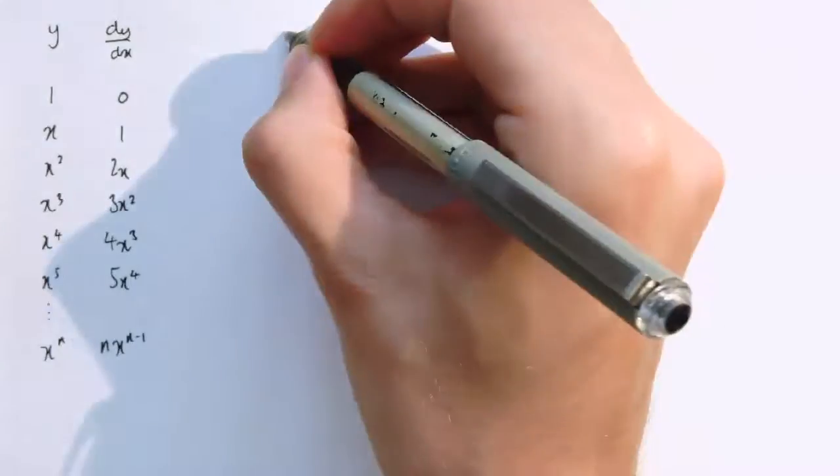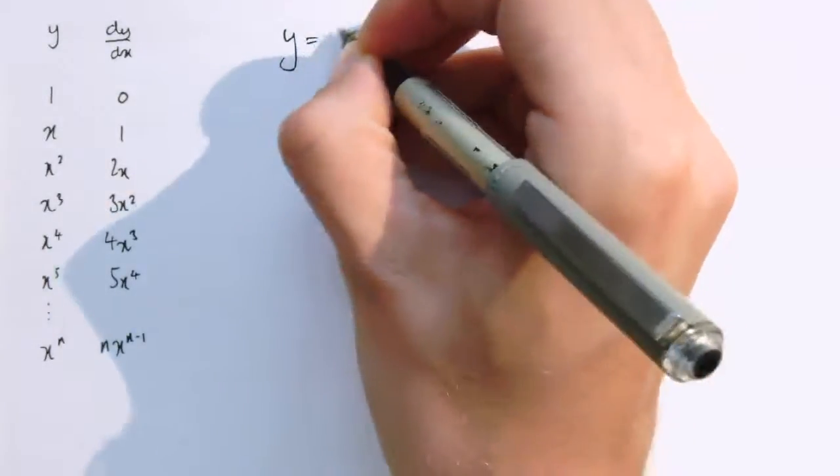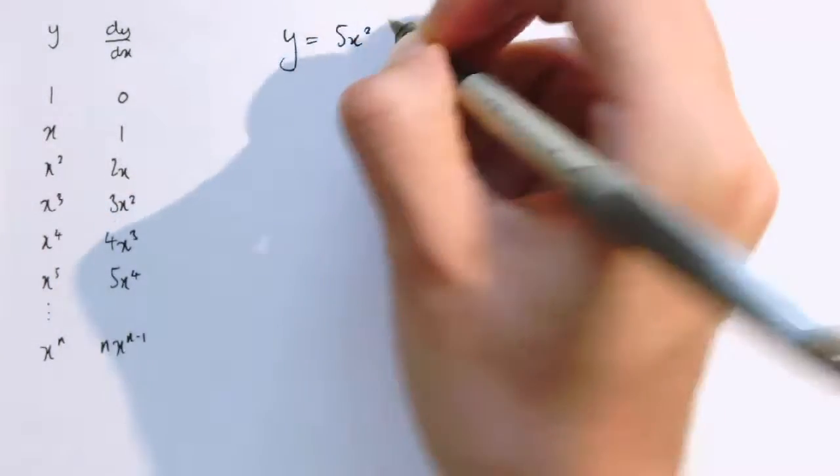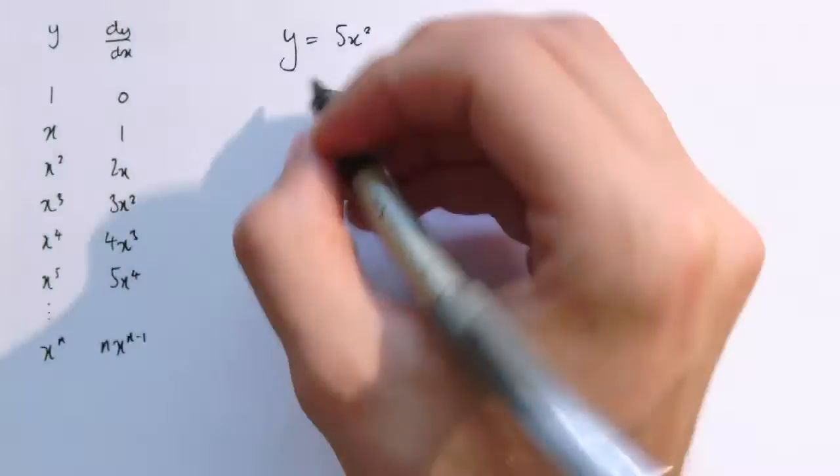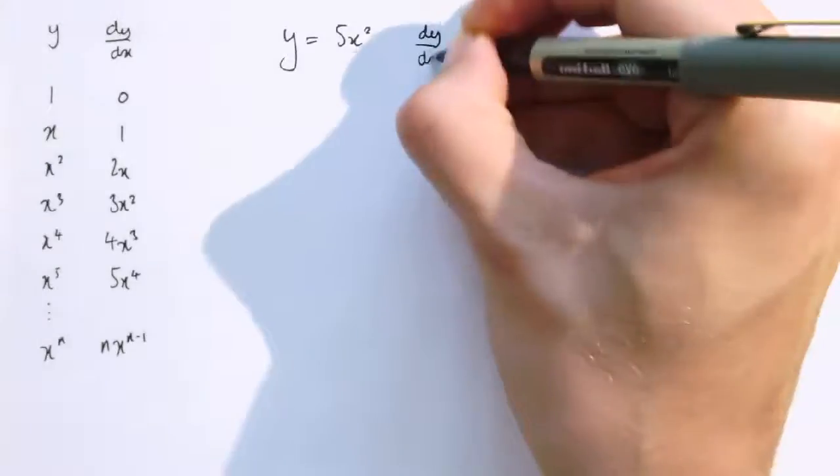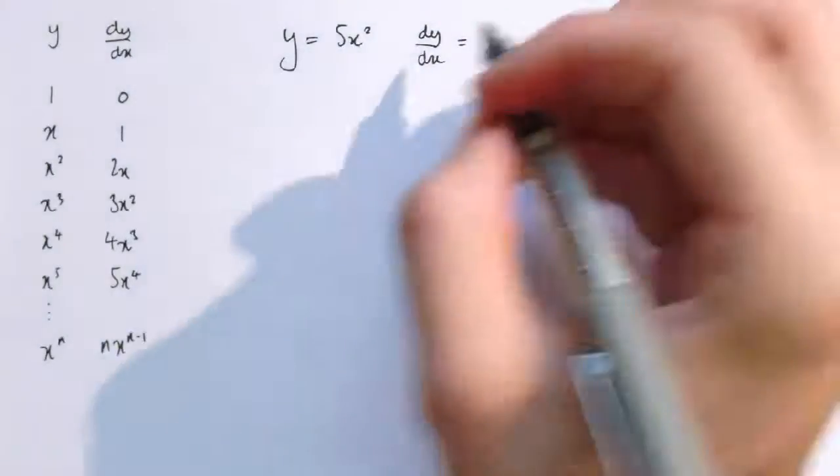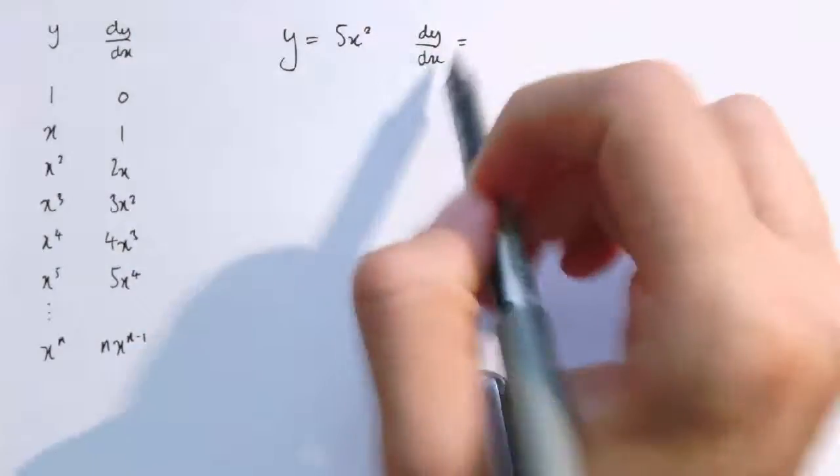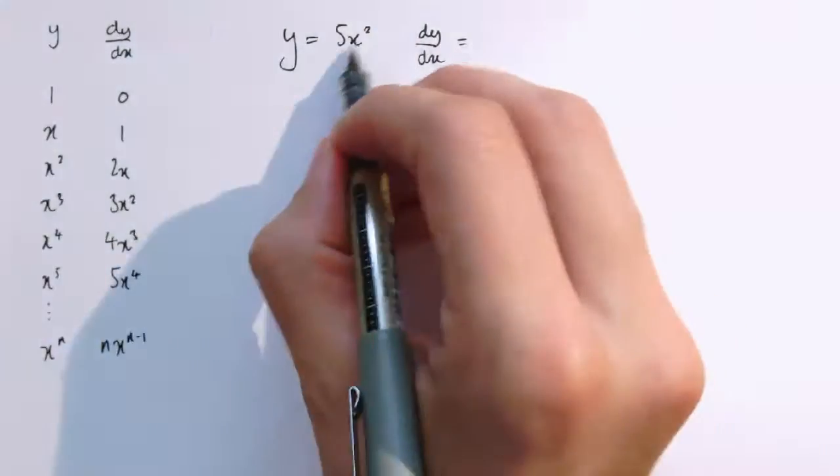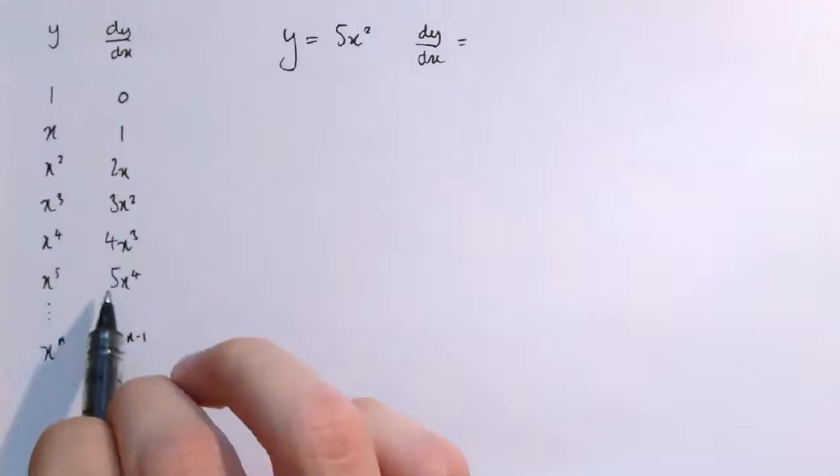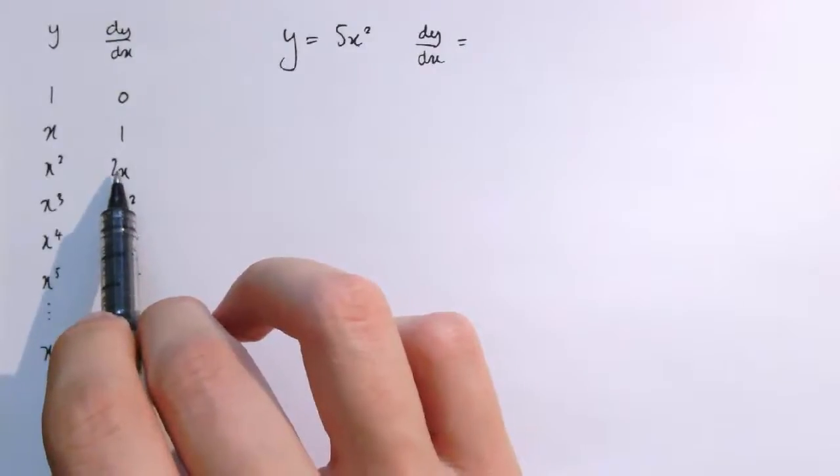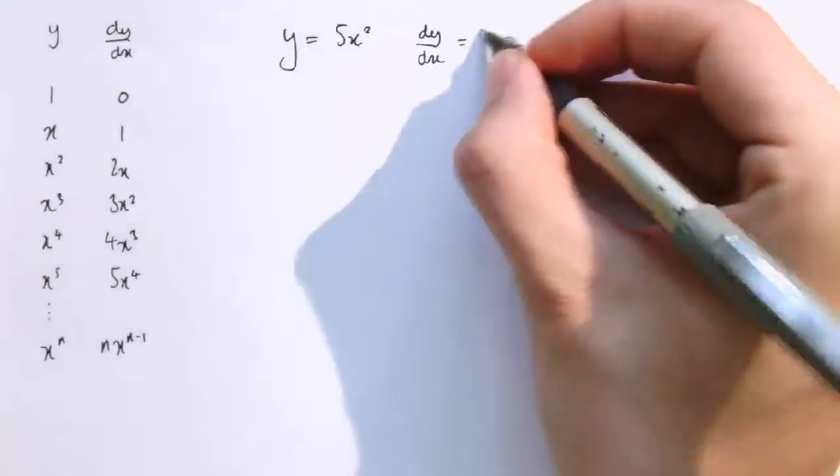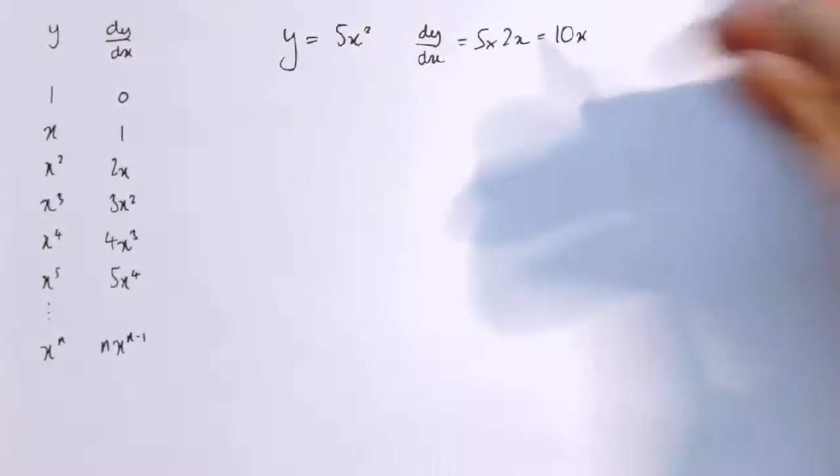So, for example, if I wanted to differentiate y equals 5x squared, what we do, well, if x squared were differentiated to x, and we've just got 5 lots of it, and it turns out actually that dy/dx is just 5 times the derivative of x squared, i.e., by the derivative, I mean dy/dx. So actually, if we just multiply a function by a number, we can multiply dy/dx by that number as well. So 5 times x squared, dy/dx becomes 5 times 2x, which is 10x.